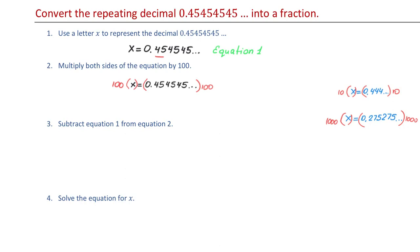Now let's go back to our problem. 100 times X is 100X and when we multiply the right side by 100, the decimal point will move two places to the right and that will give us 45.45 repeating. Now we will call this equation equation 2.